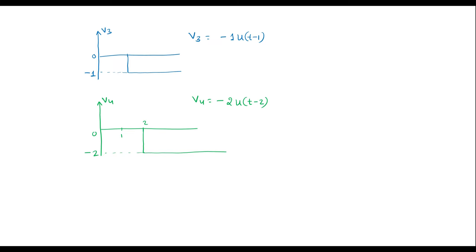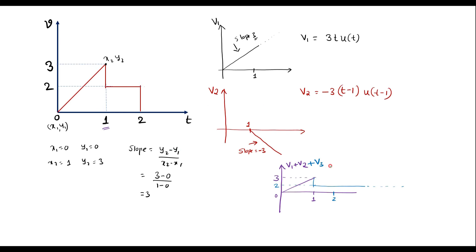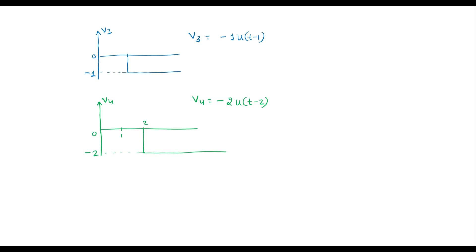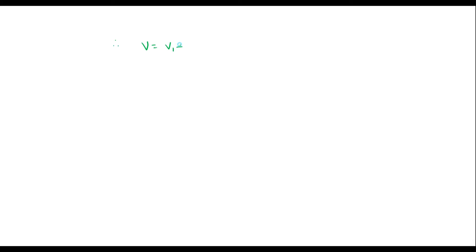Upon adding V4, when we add the negative step of magnitude 2, the plus 2 and minus 2 cancel, bringing the signal down to 0 — which matches the original waveform. Therefore, V equals V1 plus V2 plus V3 plus V4.